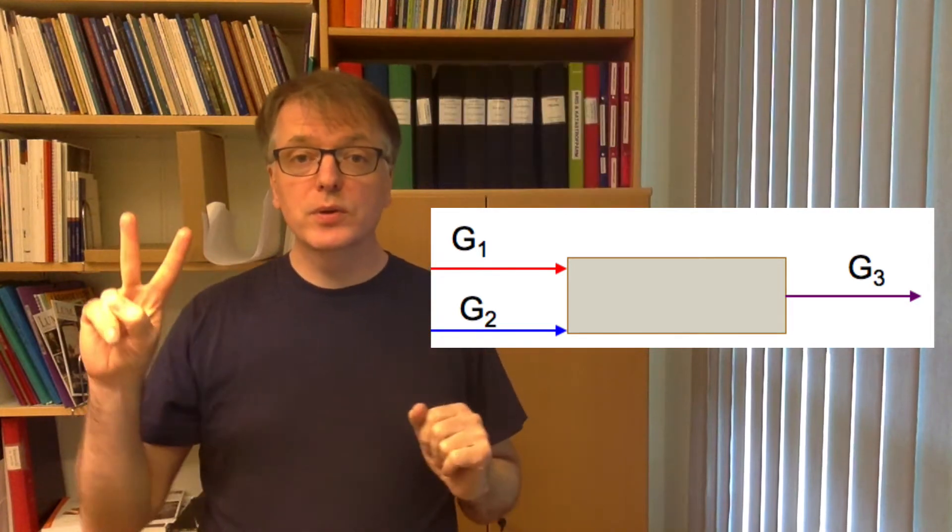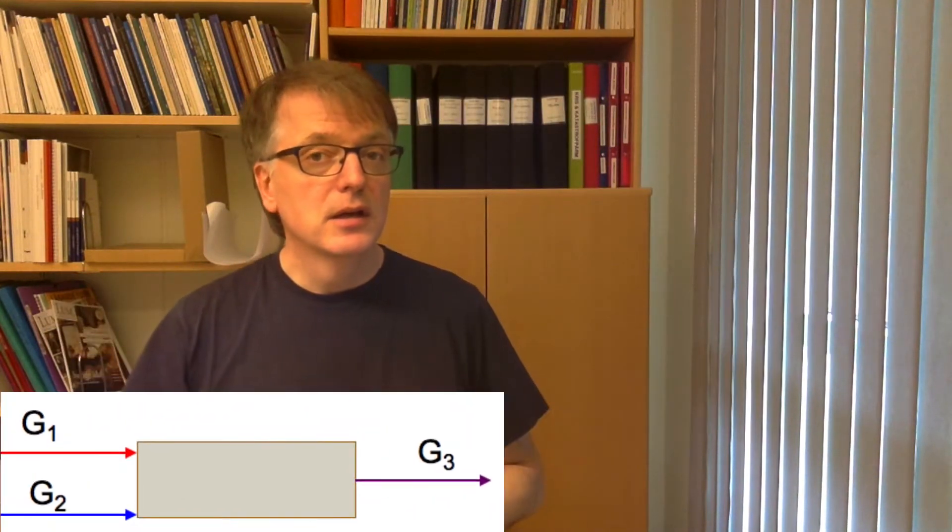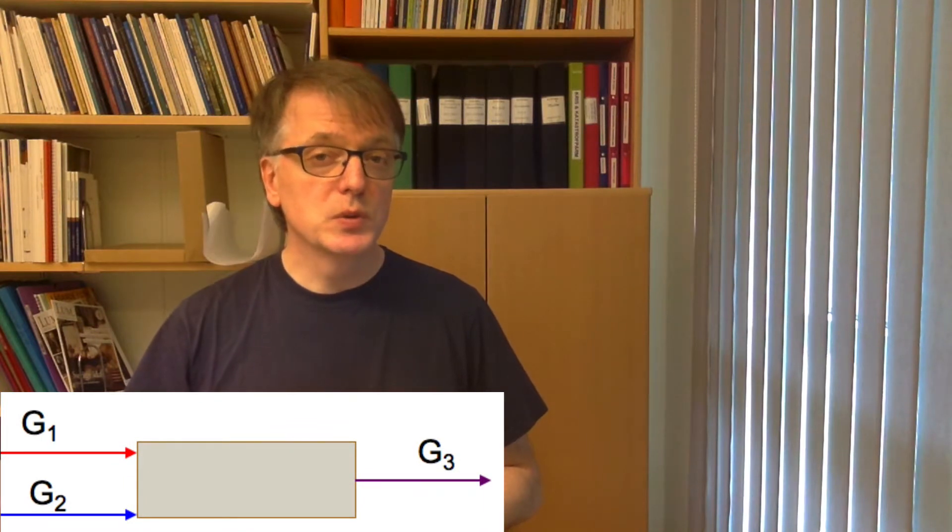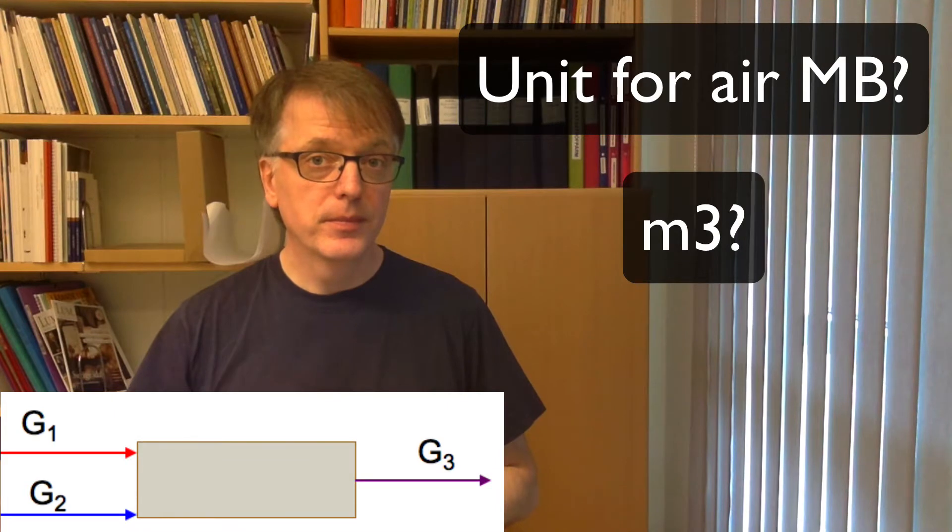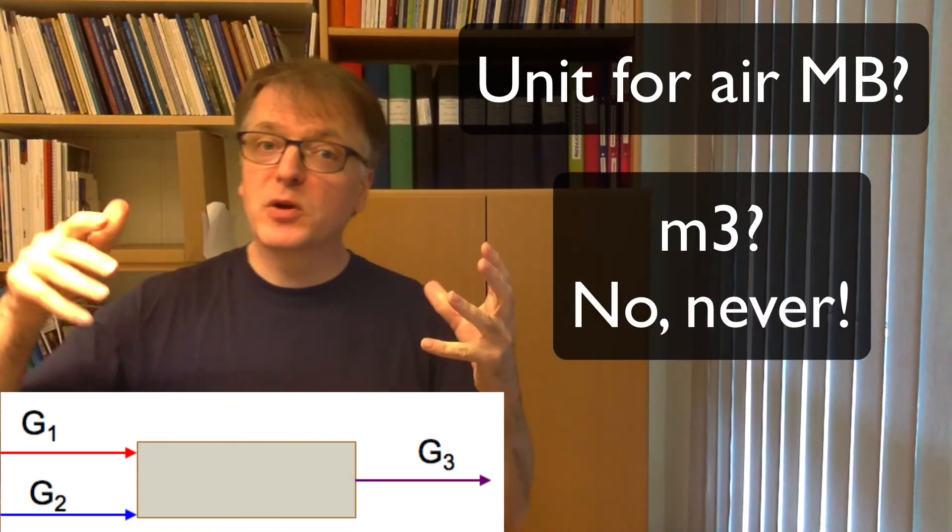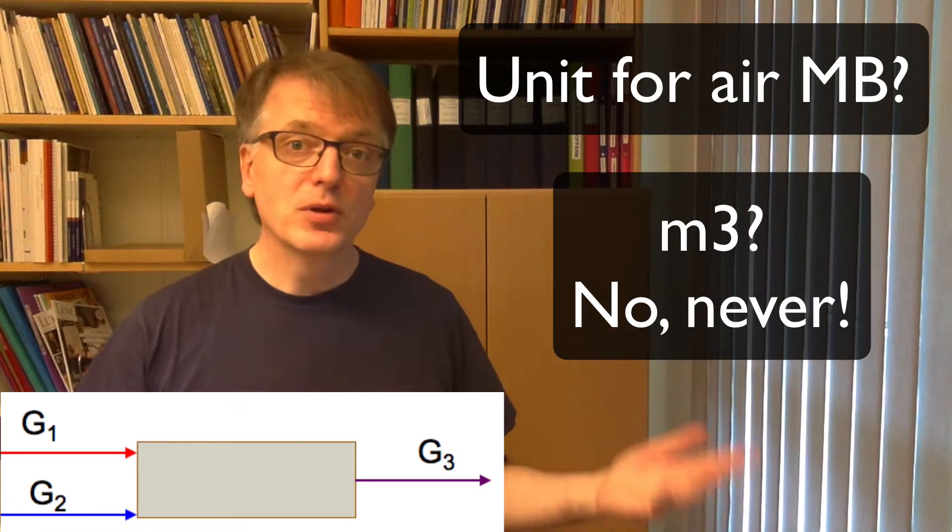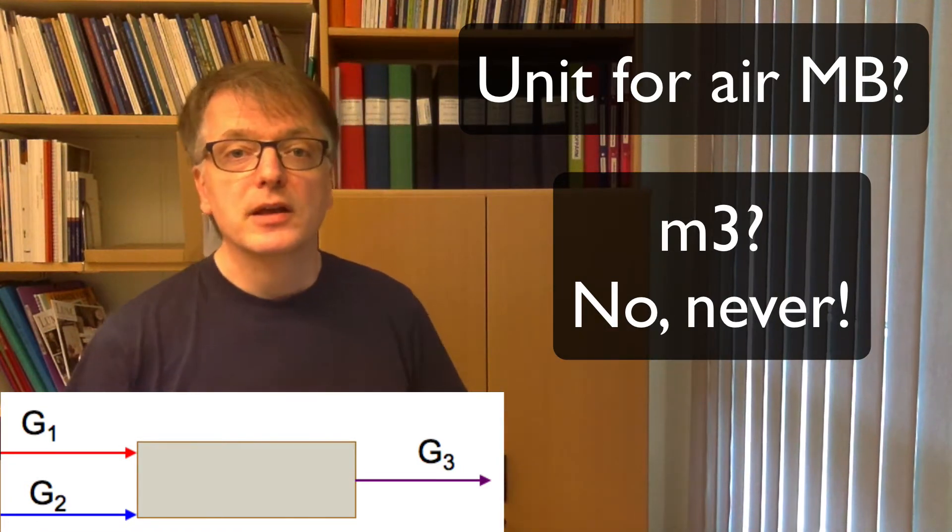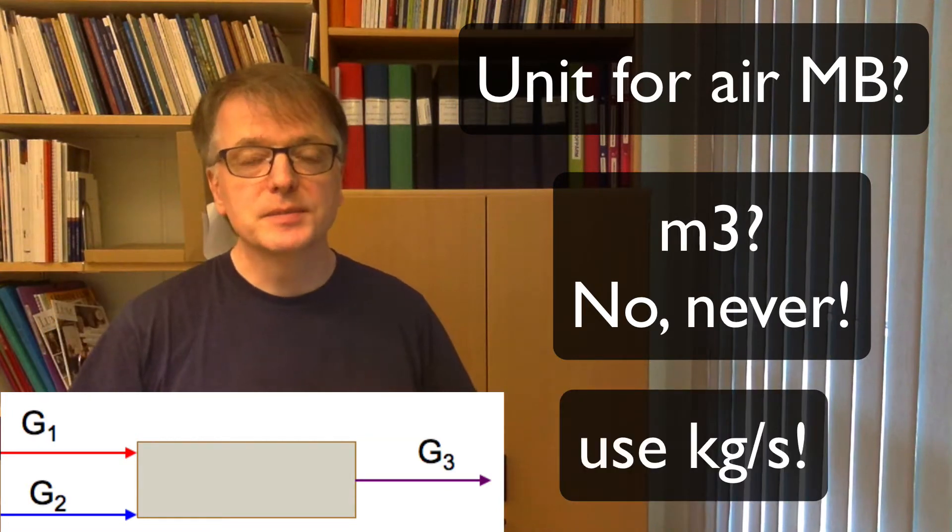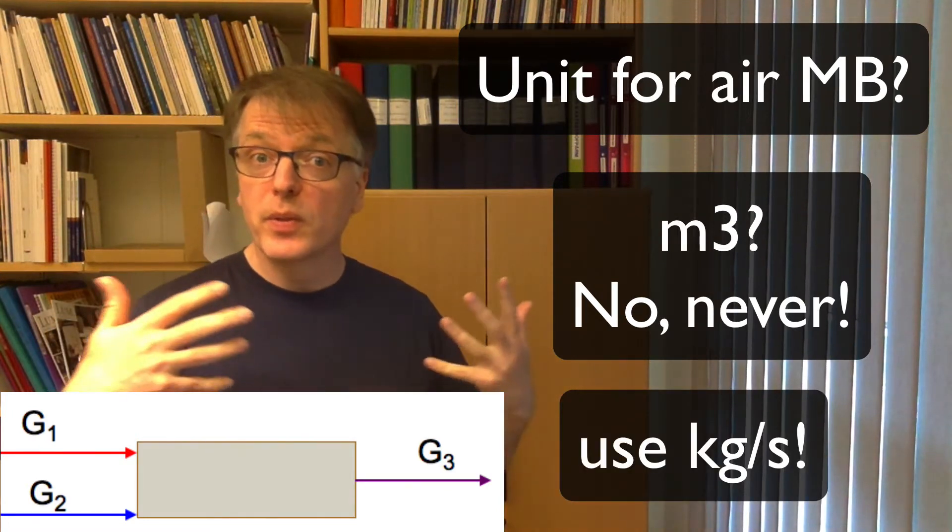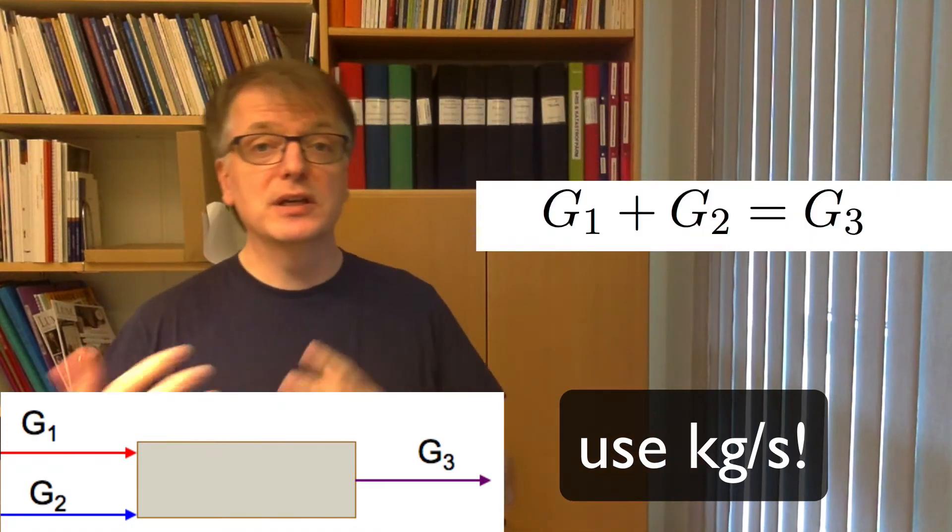Well we have two components and we start with the mass balance for air. What unit should we use? Can we use volume? No, we can't use volume because the temperature might change and if you have a gas the volume changes. So we must use kilograms per second. So then the mass balance becomes really simple. It's just g1 plus g2 equals g3.